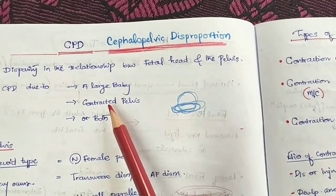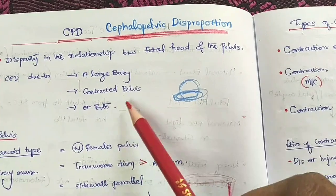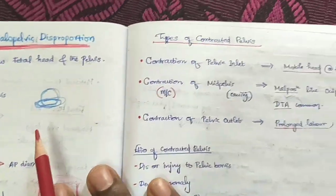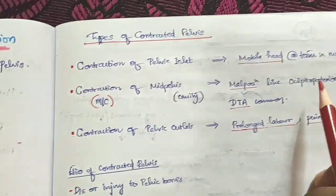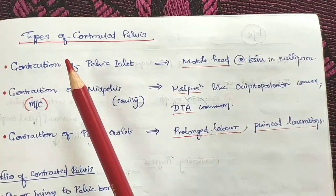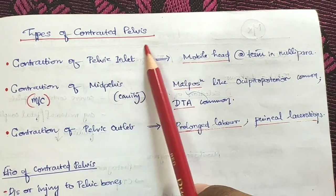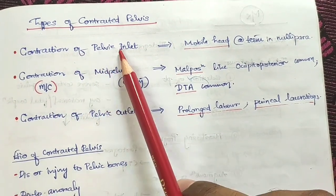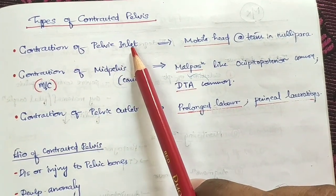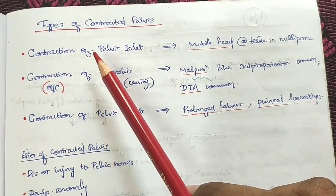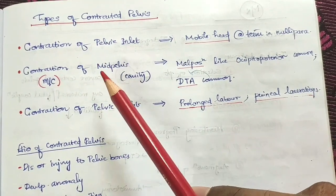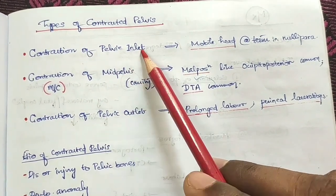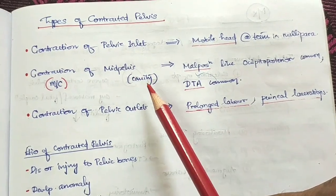CPD is due to a large baby, a contracted pelvis, or both. The types of contracted pelvis: contraction can occur at various levels. The pelvis is divided into three parts — the pelvic inlet, mid pelvis, and pelvic outlet.